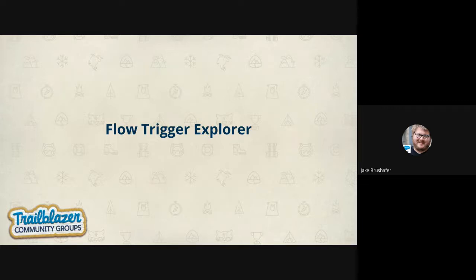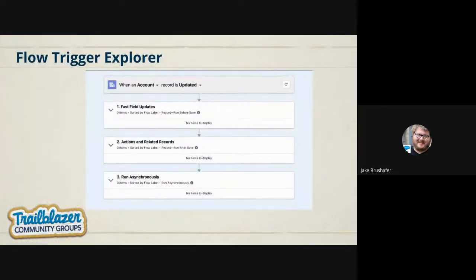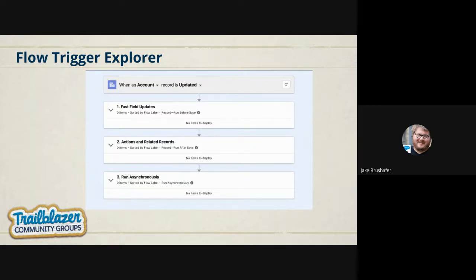The flow trigger explorer is also a cool thing coming out. It allows you to take all your different flows and set them in an order to be run. Up top you can specify the object, whether it's on create, on update, or whatever conditions apply. Then you can tell it which flows to run and in what order. If you have more than one flow on a particular object, you can say this one first and this one second. Currently when you have multiple flows on a single object, they all fire at the same time. This gives you control over that order of operation.